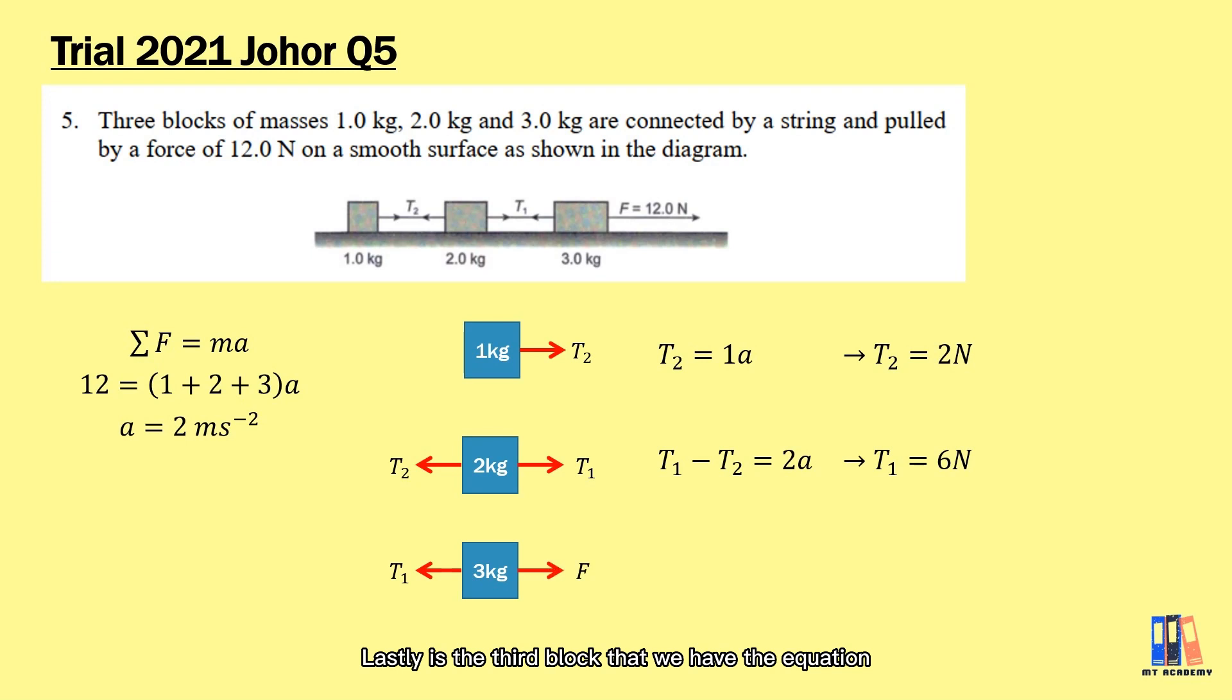Lastly, the third block: we have the equation F minus T1 equals 3a. If we put in all the values, the left hand side of the equation should equal the right hand side.